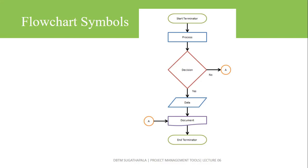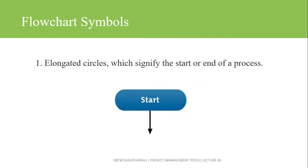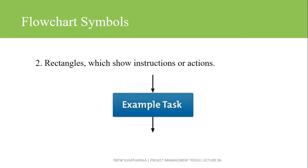An elongated circle signifies the start or end of a process. This is the start and end shape. Rectangles show instructions or actions. If you have a task or instructions, you can use the rectangle shape.